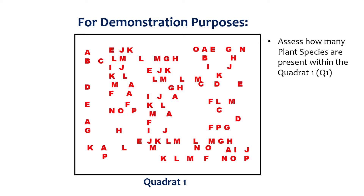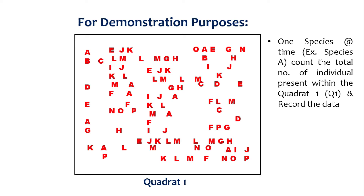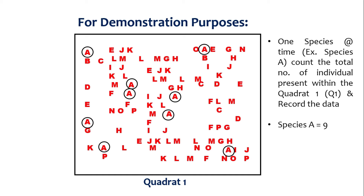Then, assess or confirm how many plant species are present within Quadrat 1. In this demonstration, let there be 16 number of species, so the 16 species are from A to P, or from 1 to 16. Next, one species at a time — say Species A — you start to count the total number of individuals of Species A present within Quadrat 1 and then record the data. In this demonstration, we have found there are 9 individuals of Species A present in Quadrat 1, so we write Species A equals 9.